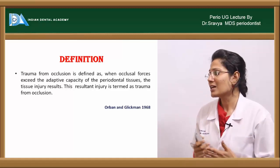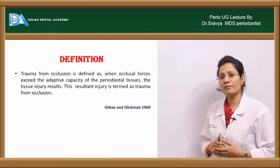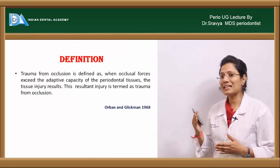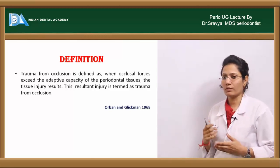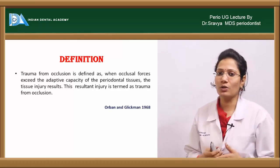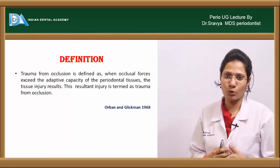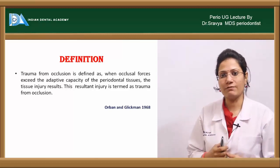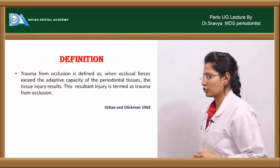Trauma from occlusion is defined as when occlusal forces exceed the adaptive capacity of the periodontal tissues, the tissue injury results. This resultant tissue injury is defined as trauma from occlusion.